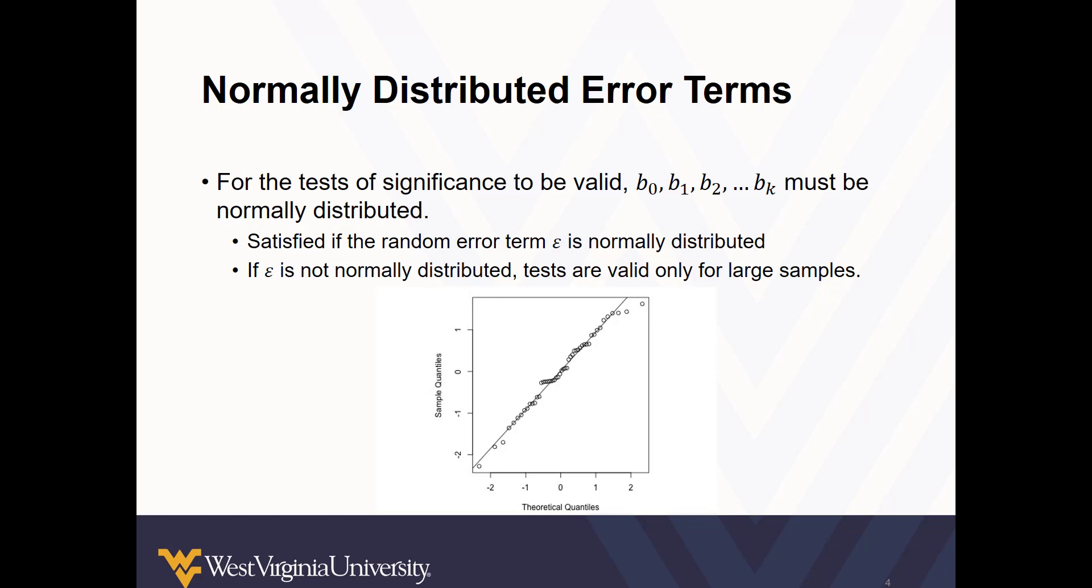So our betas are the unknown parameters, and we estimate these values when we calculate them in a regression model. And we can conduct joint tests of significance about all of the parameters or individual parameters.